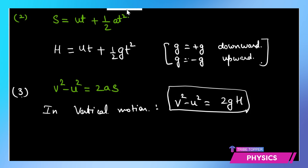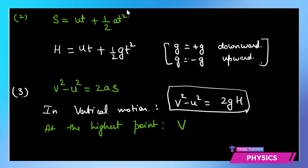For vertical motion, the third equation becomes v² − u² = 2gh, where a = g and s = h (the height covered). At the highest point of a thrown object, the final velocity v = 0. Remember: g is negative when throwing upward, and positive when the object falls downward.